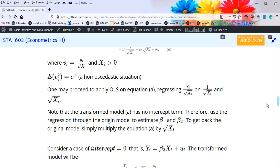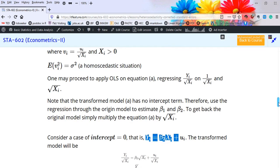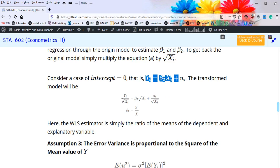There is an interesting case when there is no intercept in the model. That is, Y_i equals beta 2 X_i plus u_i. This model will be transformed to a model in which beta 2 is the ratio of means of the dependent variable and independent variable.